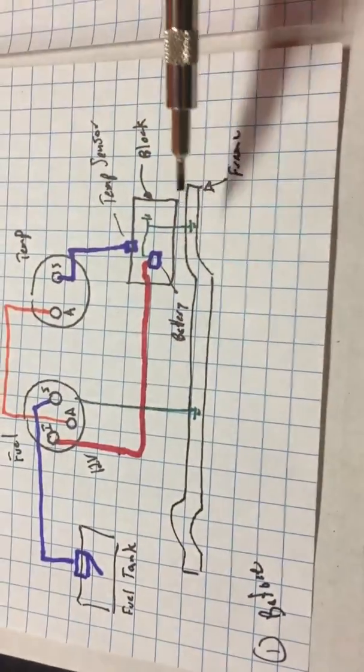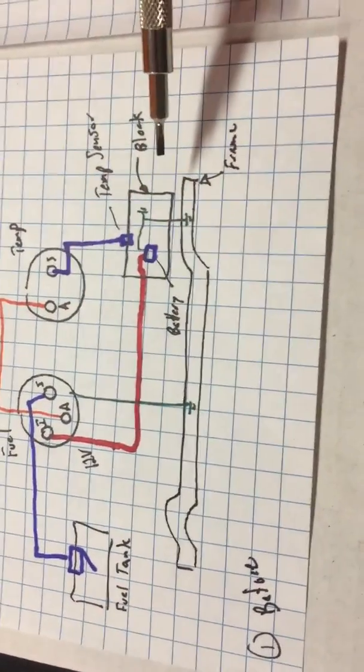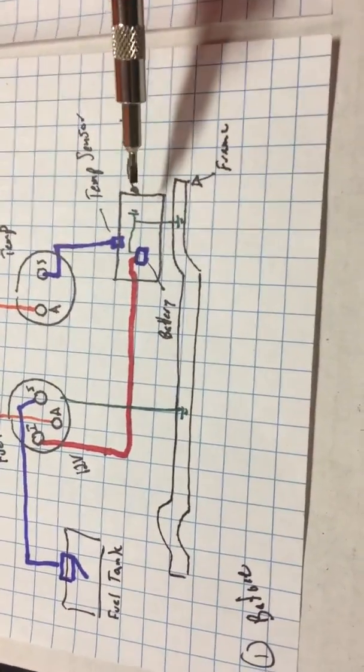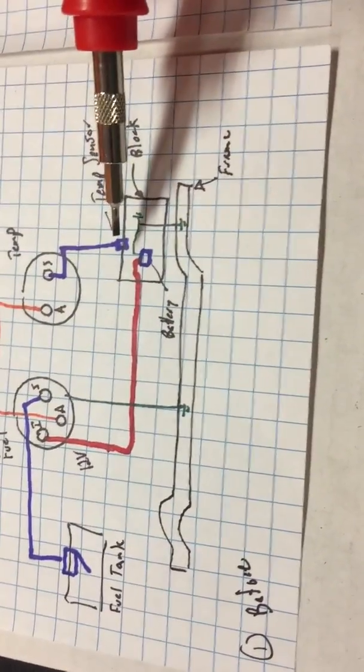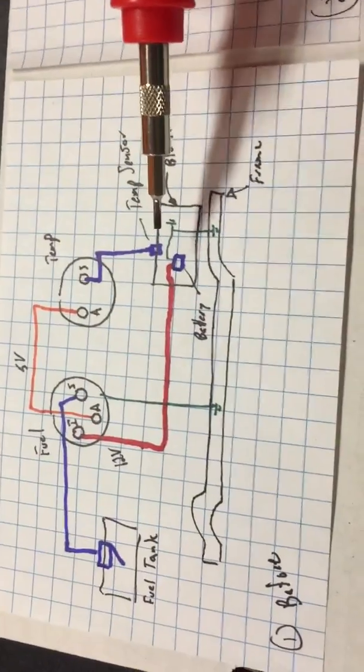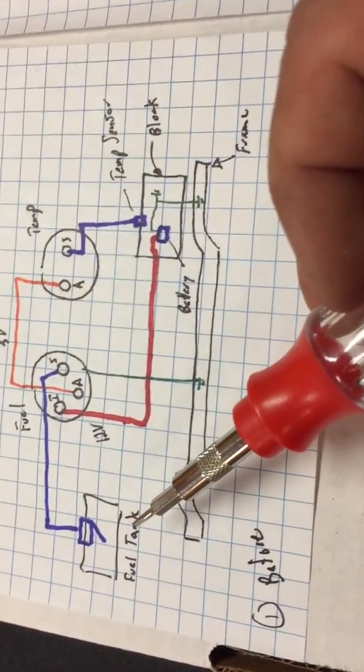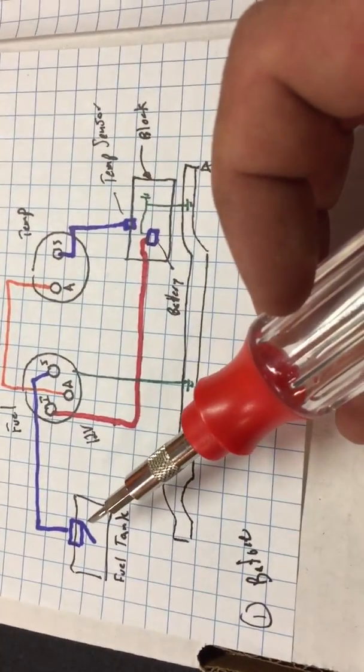You have the frame for the Jeep, which is what everything's grounded to. We have the block for the engine, and on that block we have the battery in the engine compartment, the temp sensor, and then also in the Jeep we have the fuel tank, which has the fuel level sending unit.